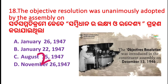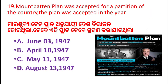Next question, question 19: Mountbatten plan was accepted for a partition of the country. The plan was accepted in which year? Option C: May 11, 1947. Option D: August 13, 1947. The correct answer is June 3, 1947.